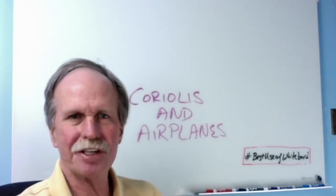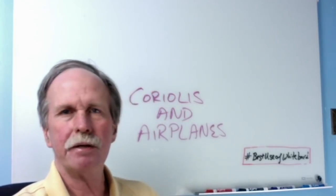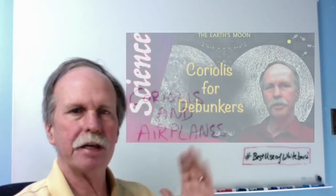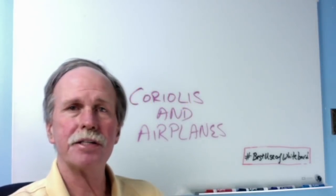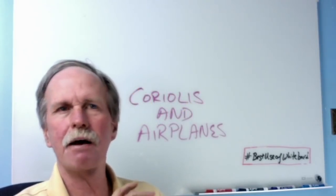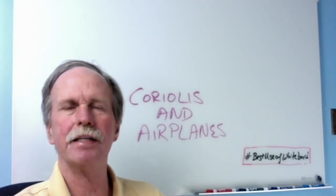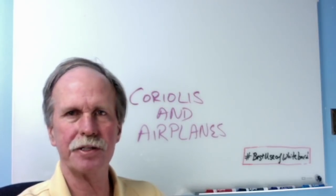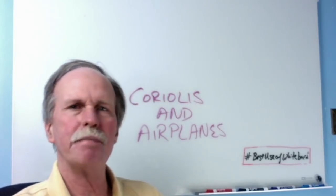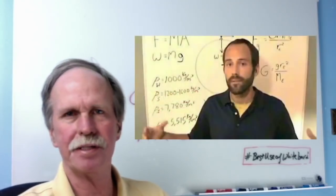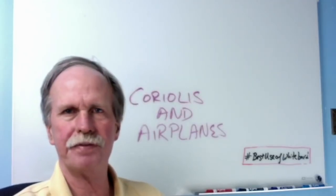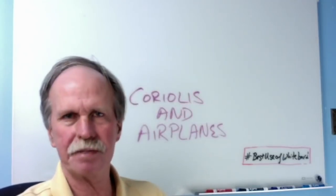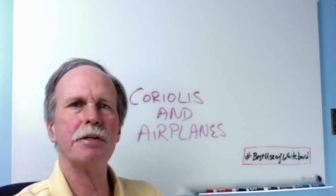Well, hi everyone and greetings from northern Michigan. This is Bob the Science Guy. Not long ago I did a video on the Coriolis effect and what you needed to know about it. Now in the flat earth community there still seems to be a lot of confusion about how aircraft in flight deal with Coriolis factors. Most of this confusion can be traced back to Brian Mullins, a flat earth engineer. Today we're going to go over his video and try to make some sense out of it.